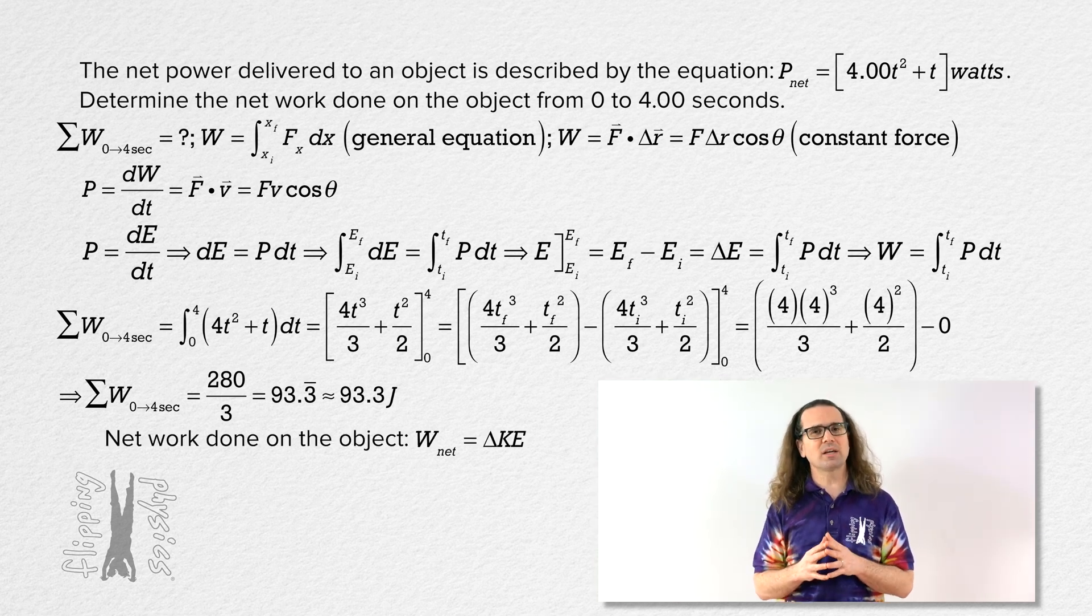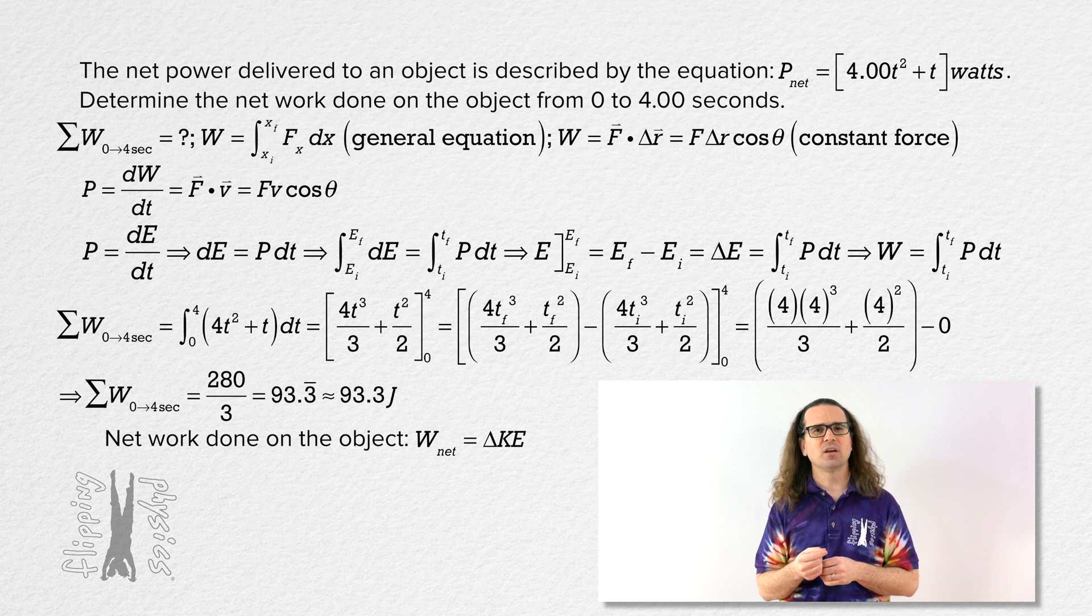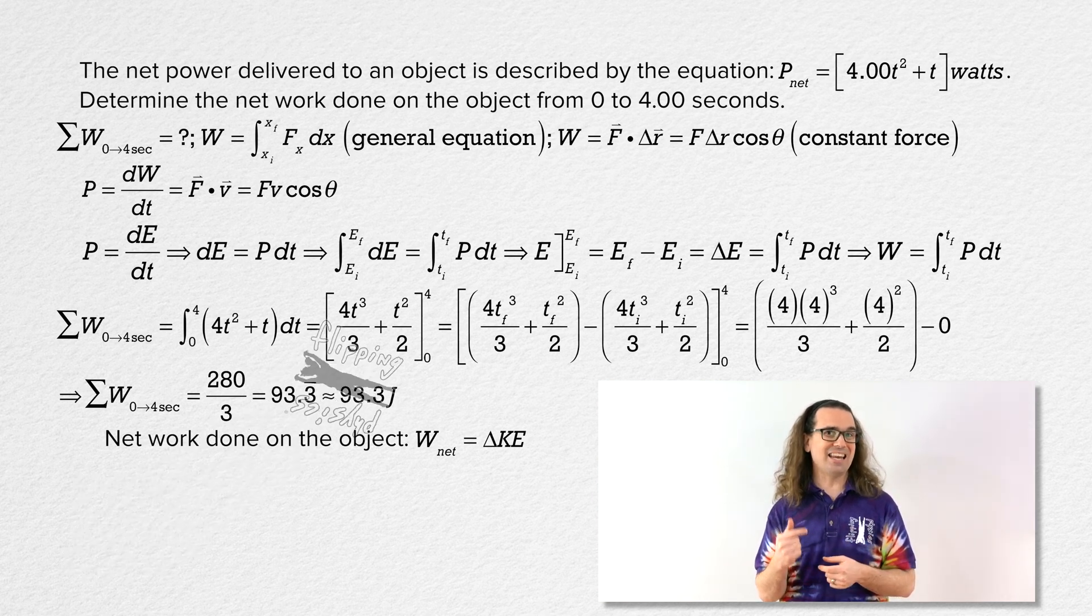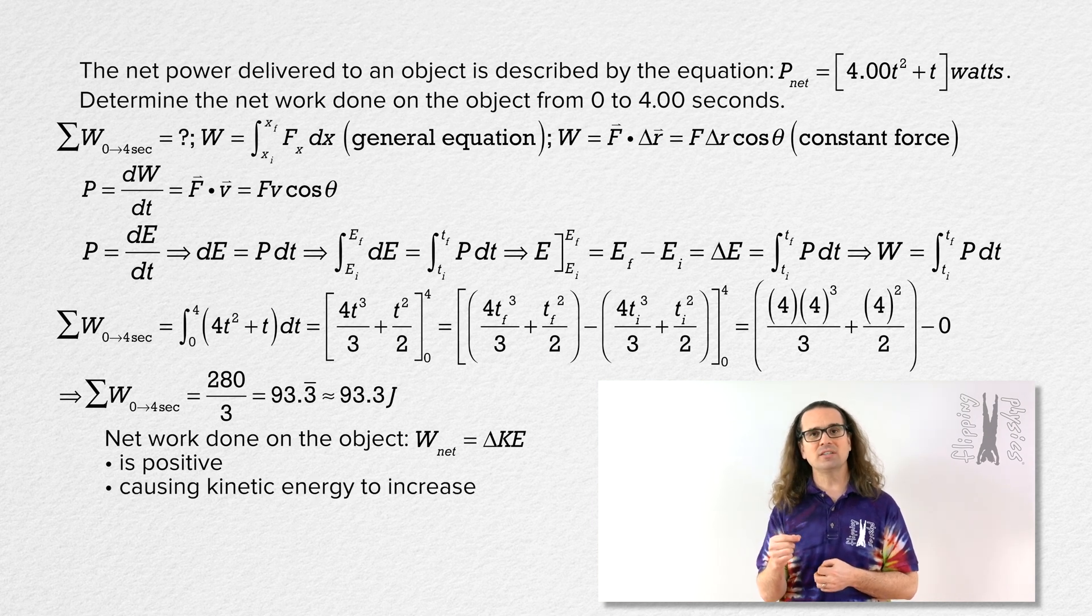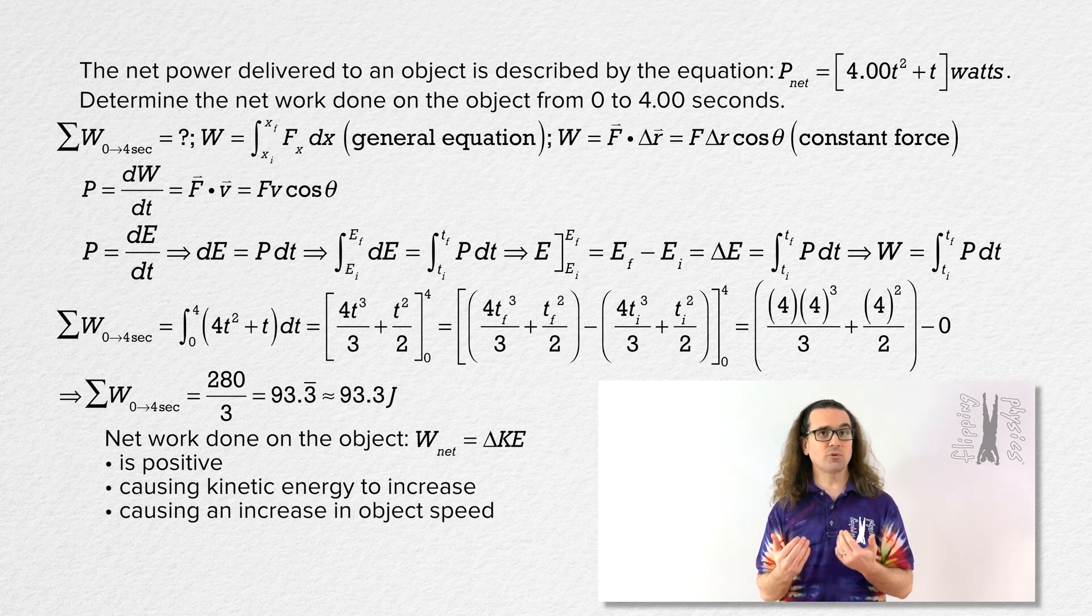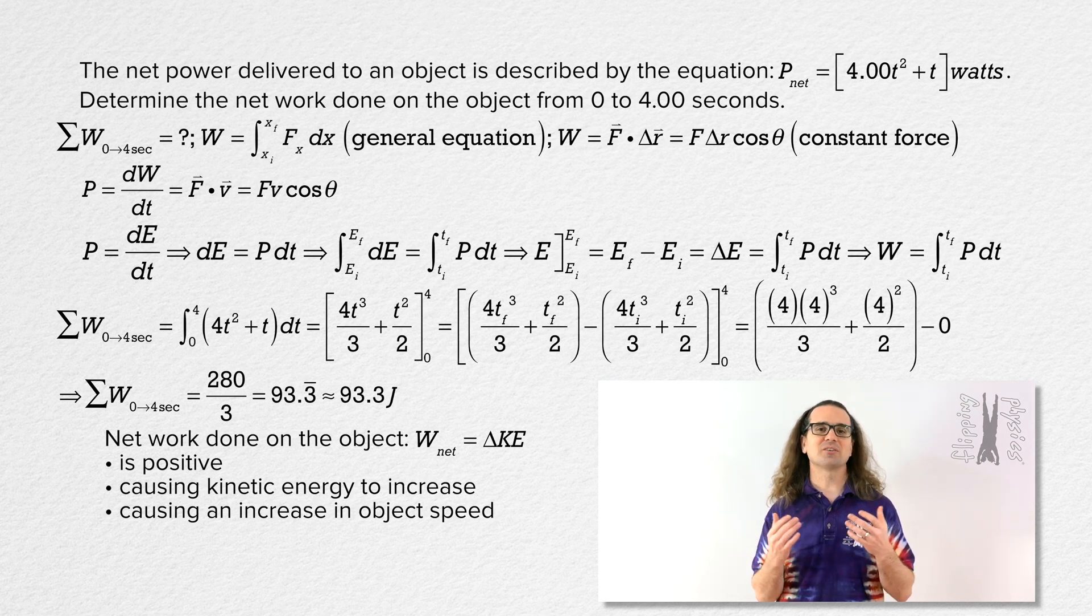And lastly, because network equals change in kinetic energy, we know that change in kinetic energy from 0 to 4 seconds of the object equals positive 93.3 joules. In other words, because the network done on the object is positive, the network done on the object is causing a positive change in the kinetic energy of the object. It is increasing the speed of the object. Cool. Thank you very much for learning with me today. I enjoyed learning with you.